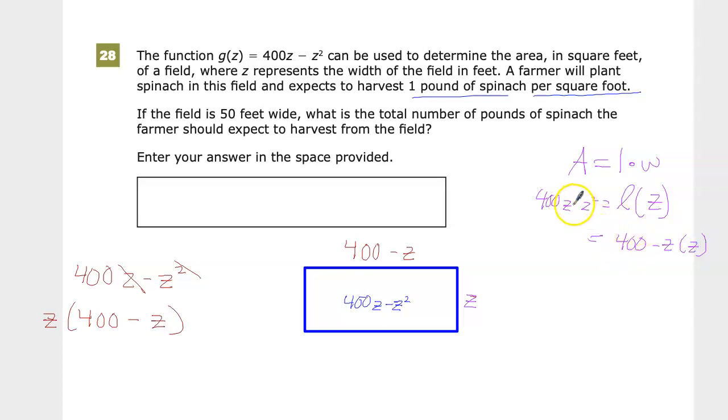and that would end up with the 400z minus z squared. Even though I didn't really need to do that step, I did it anyway. And my lousy handwriting here can justify why I always make a little line through the z so I can tell what I'm trying to do.